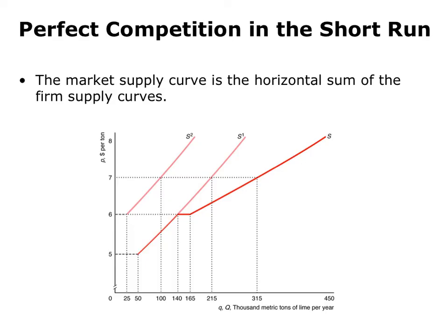For example, at a price of $5, firm 2 won't supply any units of the good. Firm 1 will supply 50 units, and so the market will supply 0 plus 50 equals 50. At a price of $6, firm 2 will supply 25 units, firm 1 will supply 140 units, so the market will supply 25 plus 140 for 165. At a price of $7, firm 2 will sell 100 units, so the market supply is 100 plus 215 or 315 units. At every price, we sum the quantities to get the market supply — we call this horizontal summation.